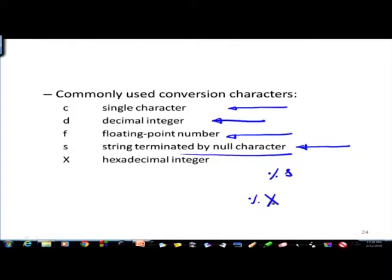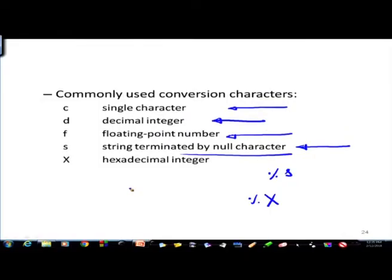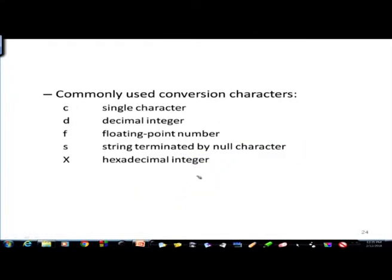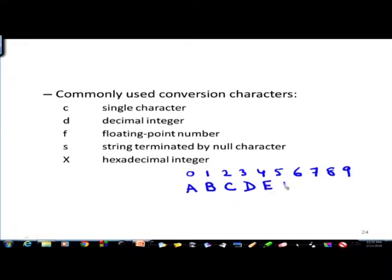Percentage x denotes that the number being read is hexadecimal. Decimal has a base of 10, meaning 0 to 9 are the elements. In hexadecimal the base is 16, so we have 0 through 9 followed by a for 10, b for 11, c for 12, d for 13, e for 14, and f for 15.